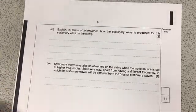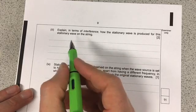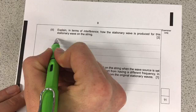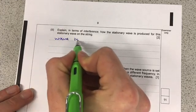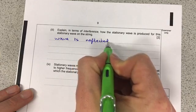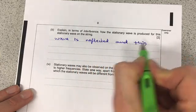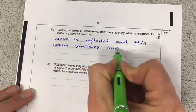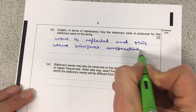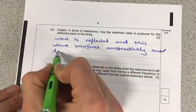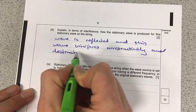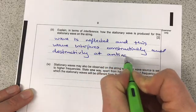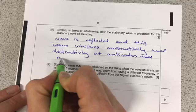Okay, so the final bit of this particular question wants us to explain in terms of interference why we get this wave produced on a string. So, the wave is reflected and this wave interferes constructively and destructively, anti-nodes and nodes.